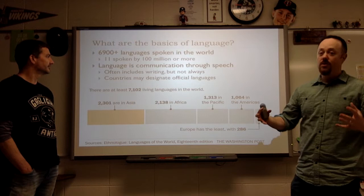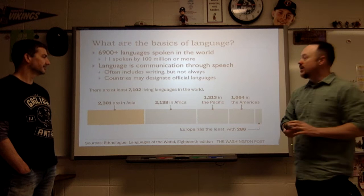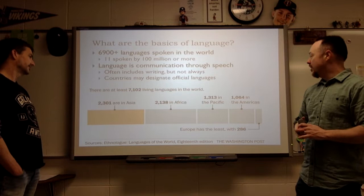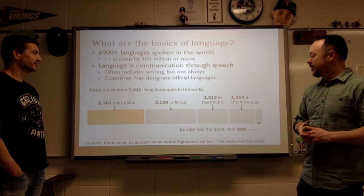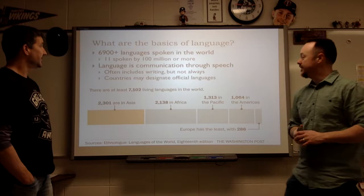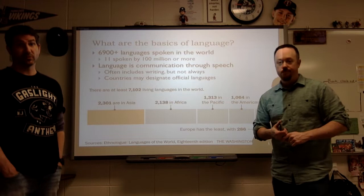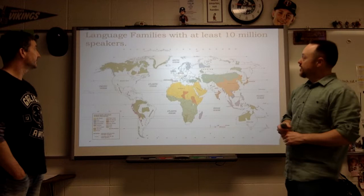A lot of times countries will designate an official language, but that's not always the case. There are 7,102 living languages in the world. You see most of them coming out of Asia, a lot coming out of Africa, and still a lot from the Americas. Lots of indigenous and folk languages. Remember, only 11 are spoken by 100 million or more — those are your major languages of the world and they operate a little differently.